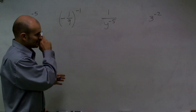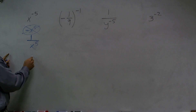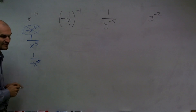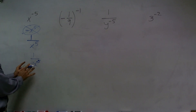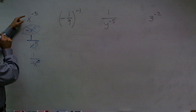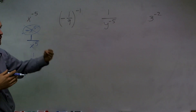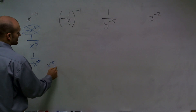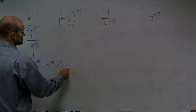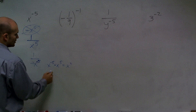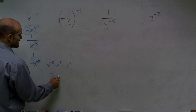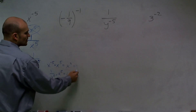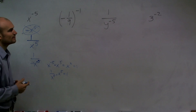Another misconception: students think 1 over x to the positive 5th should be negative. No — the real number is not changing value. We write negative 5 to represent a different placement. We can show that x to the negative 5th times x to the 5th equals x to the 0, which is the same as 1 over x to the 5th times x to the 5th — both equal 1. That's what we prove every time.